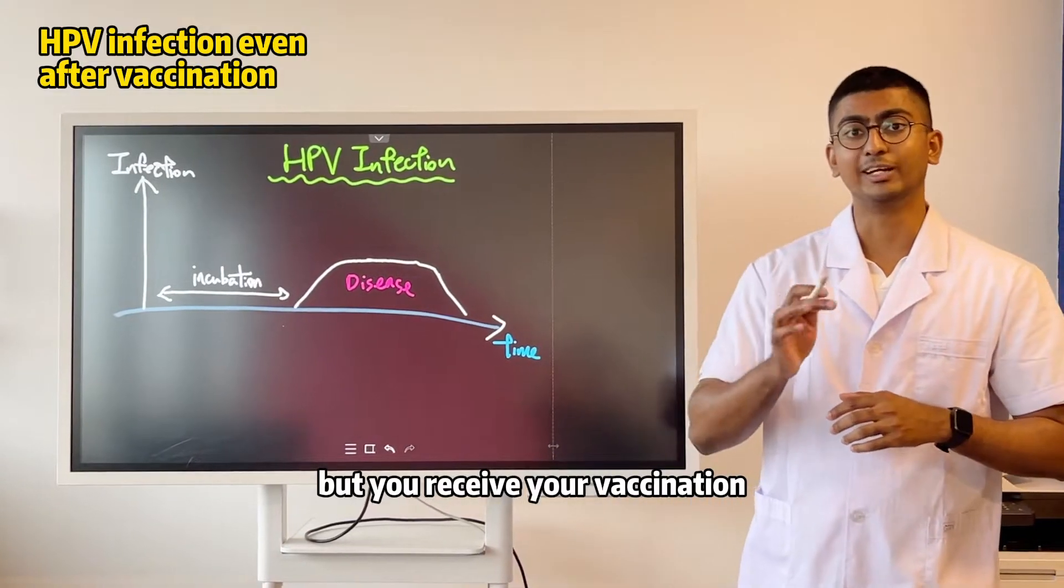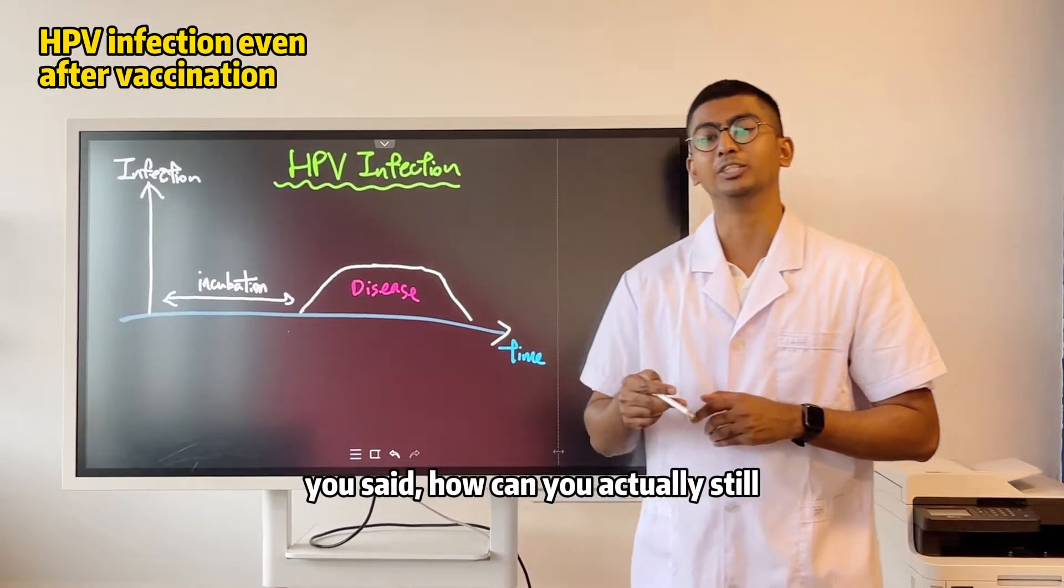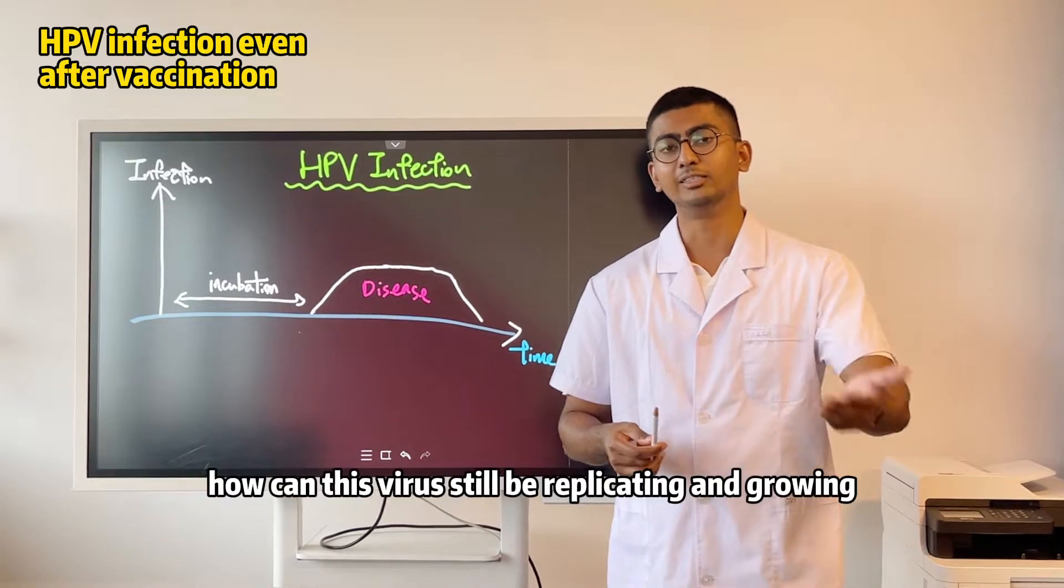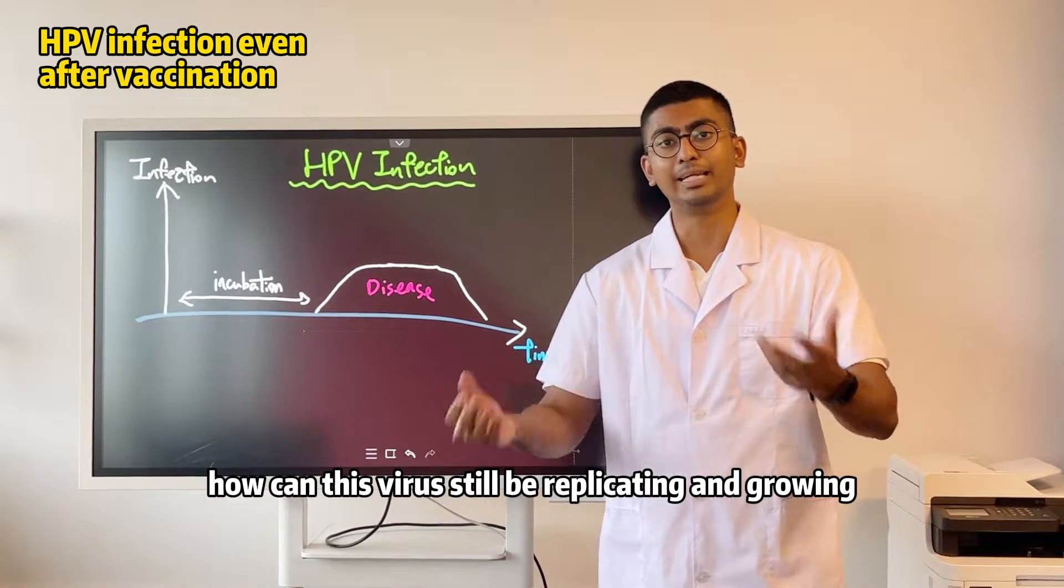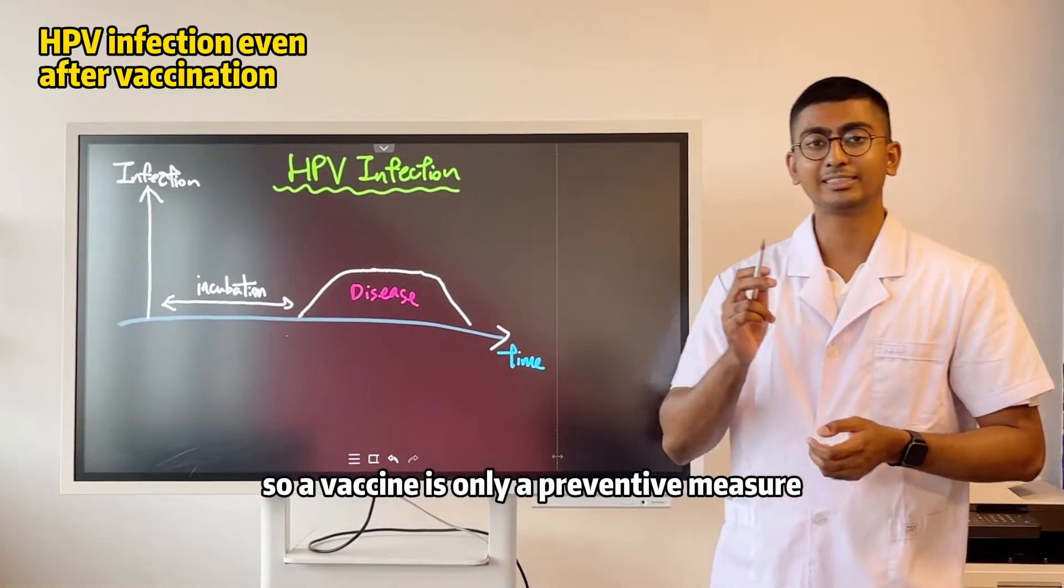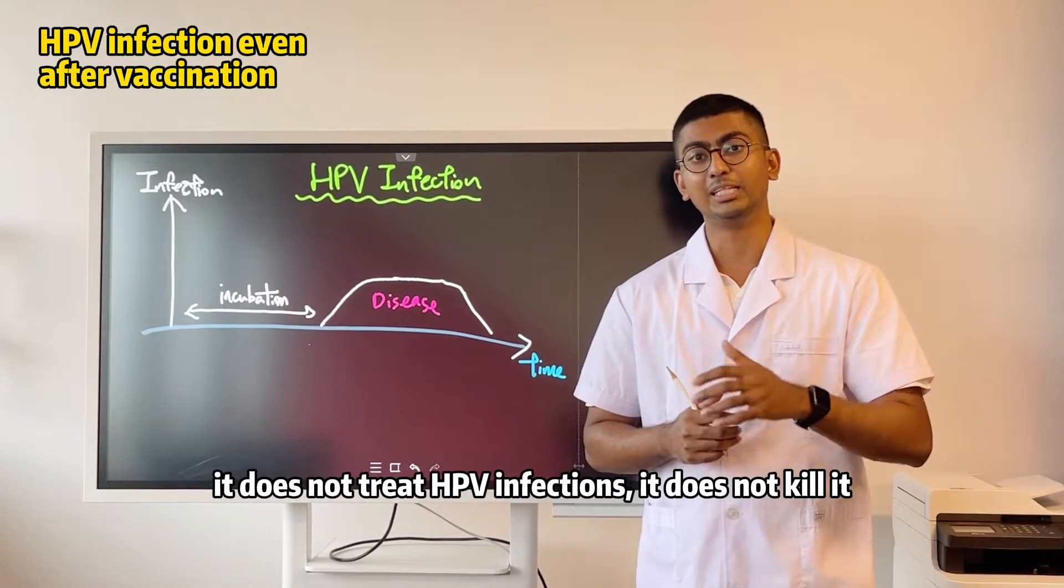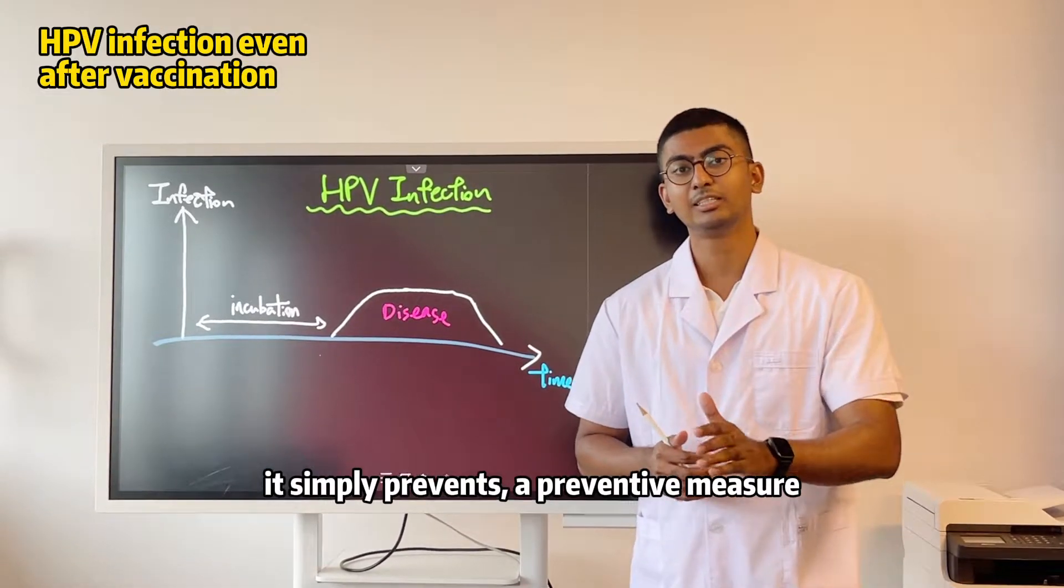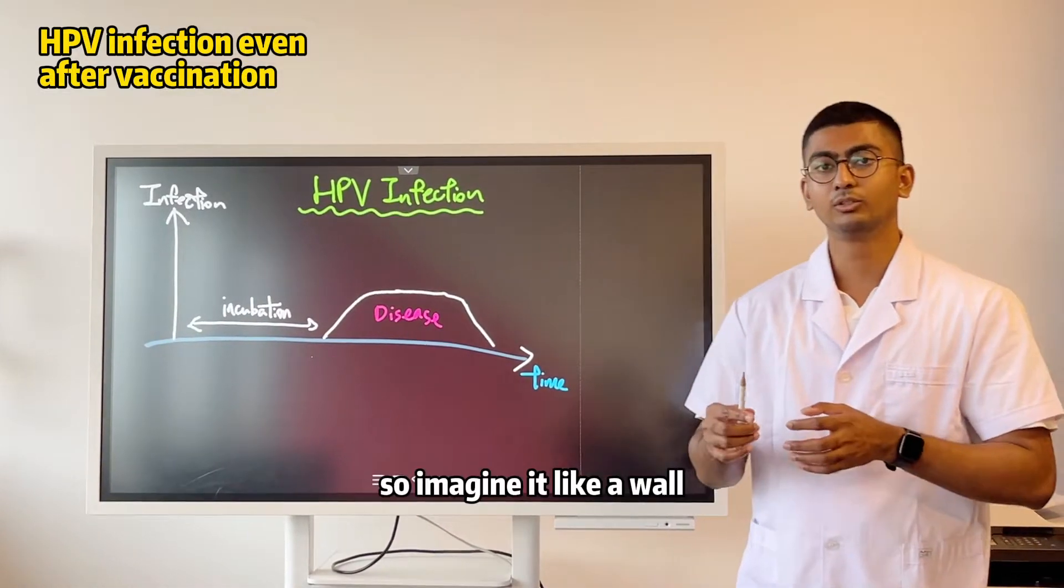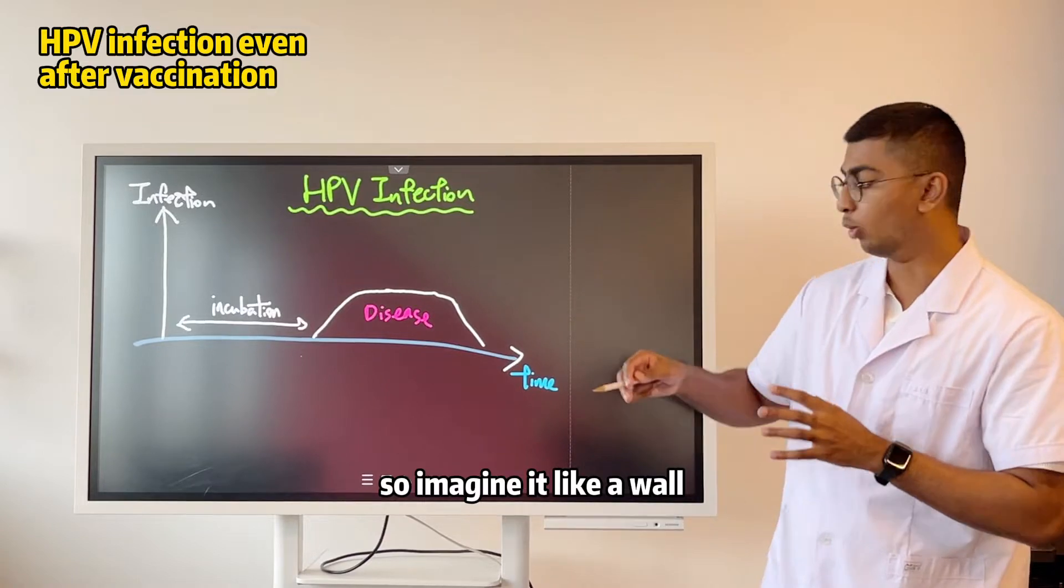But you received your vaccination, you said, how can this virus still be replicating and growing? So a vaccine is only a preventive measure. It does not treat HPV infections, does not kill it. It simply prevents infection. So imagine it like a wall.